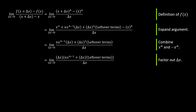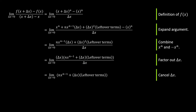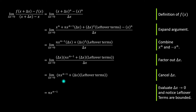Both remaining terms in the numerator have a delta x factor, so I factor that out. This gives delta x times (n·x^(n-1) plus delta x times whatever was left over), divided by delta x. The delta x in the numerator and denominator cancel. Now I don't care what the leftover terms are — they're bounded, but delta x is going to zero, so that whole piece gets annihilated, leaving just n·x^(n-1).